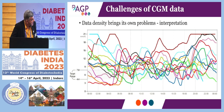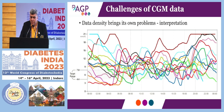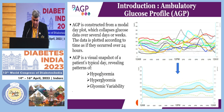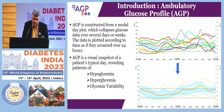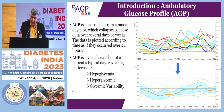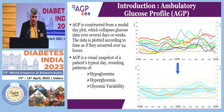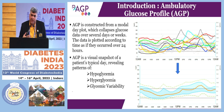You would get data very often like this, each color representing a different day, and it was very difficult to then make therapeutic changes or lifestyle changes. Which is where AGP — ambulatory glucose profile — comes in. It is constructed from a model day plot, which collapses the glucose data over several days or weeks to show the data over a 24-hour period. The current software requires at least five days of data to generate an AGP curve.